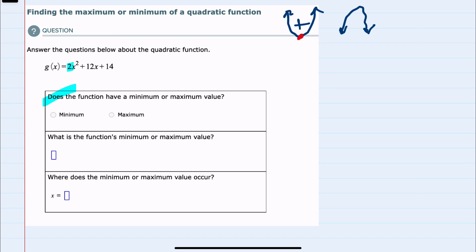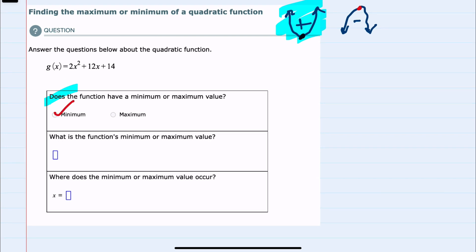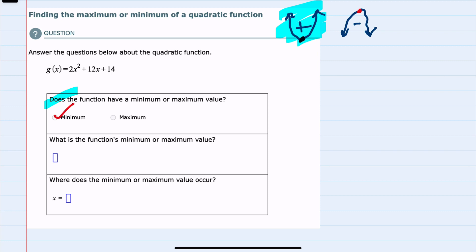And if that leading coefficient were to be negative, it would have this shape, meaning that it would have a relative maximum. So since our 2 here is positive, we'll have this situation where it has a minimum value. And we can move on to the second question: what is the function's minimum or maximum value?